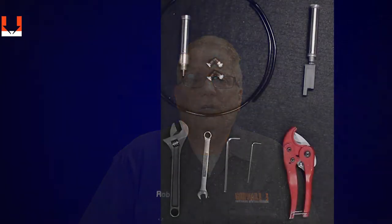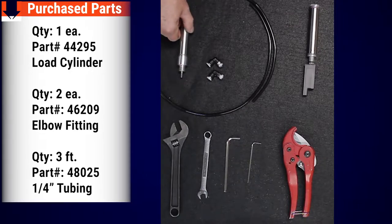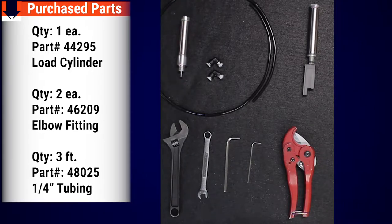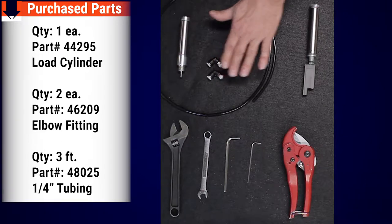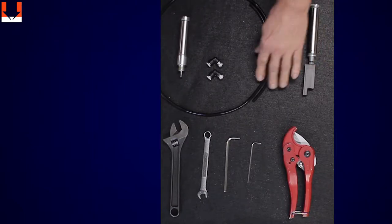First I'll cover what components are needed to complete this upgrade. Then I'll show you what tools you will need as I prepare for the assembly of the new cylinder. You will need the following parts which will also be written in the description below: one 44295 load cylinder, two 46209 elbow fittings, three feet of 48025 quarter inch tubing.